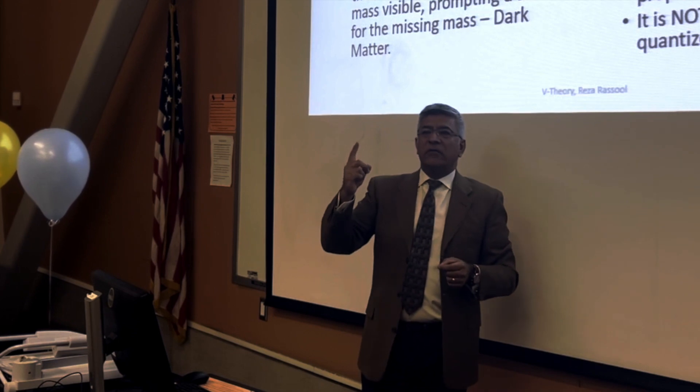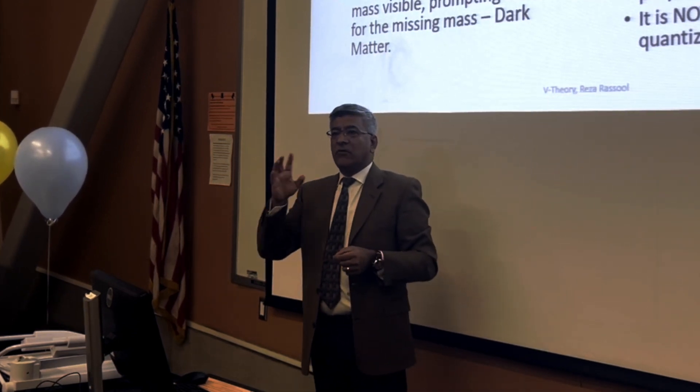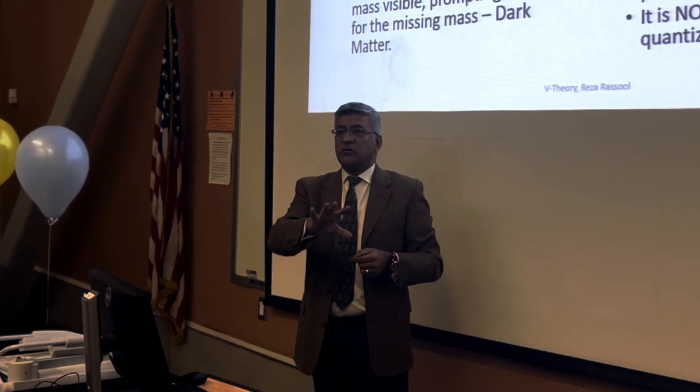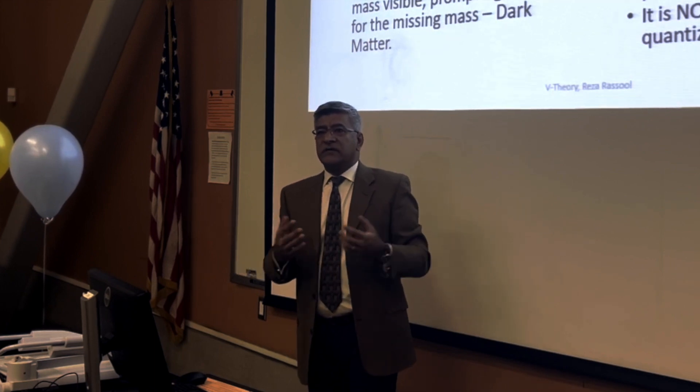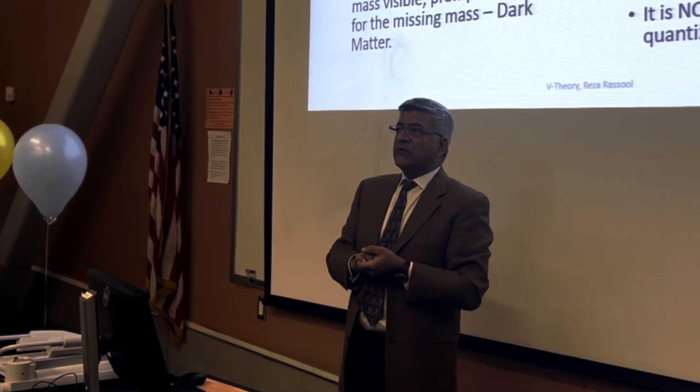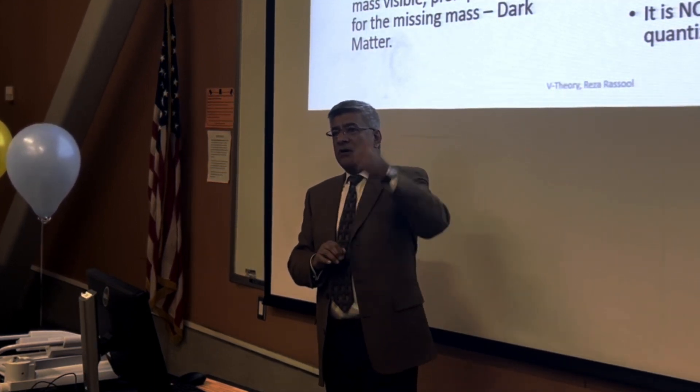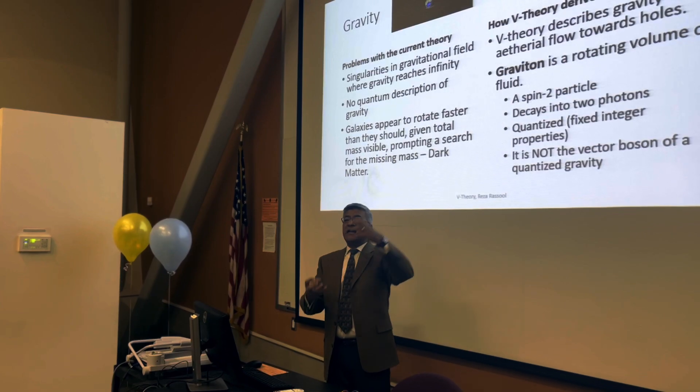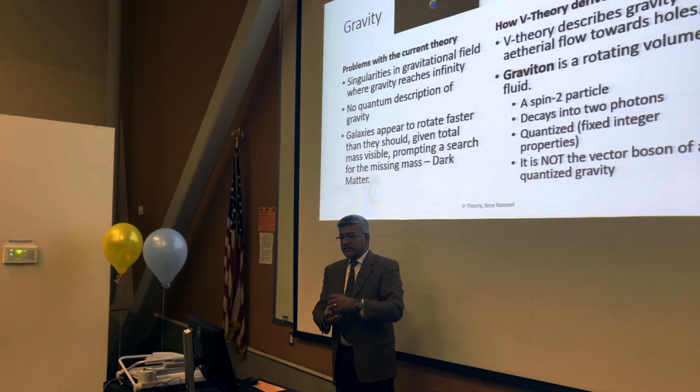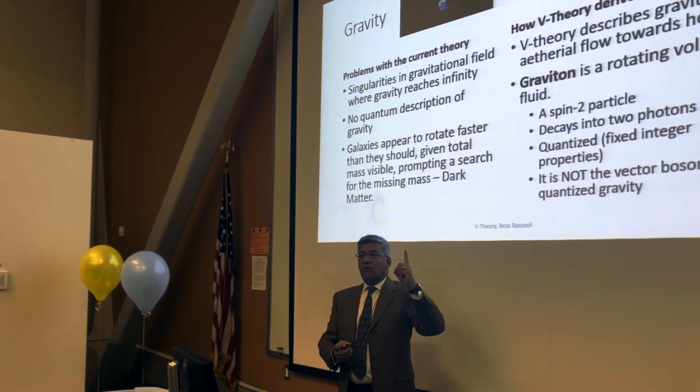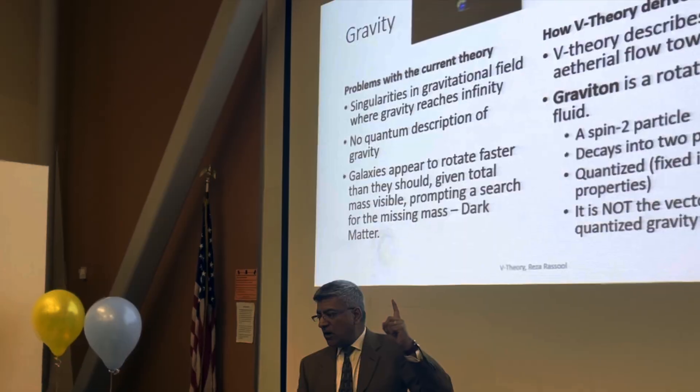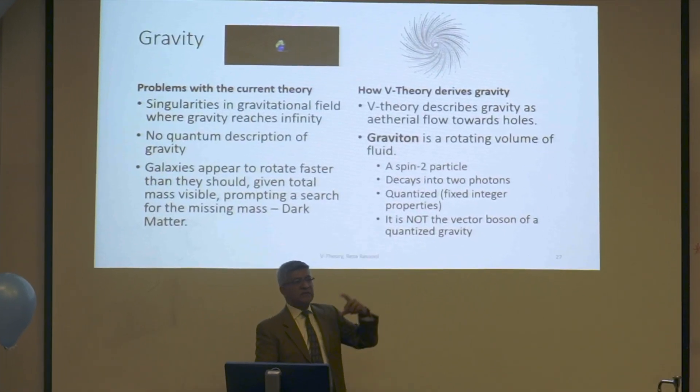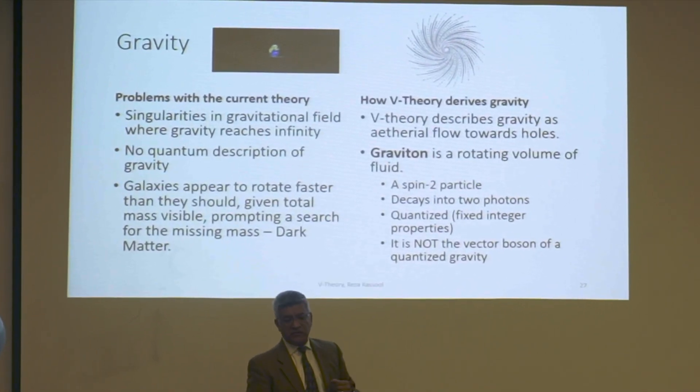That elemental volume, I'm calling the graviton, which the standard model doesn't know what the graviton is. But it does predict that it would have the spin of two, which V theory predicted will have a spin of two. It decays into two spin one particles. It decays into two, what are they? They're photons. Those two holes that are flying apart at the speed of light are, in fact, photons.